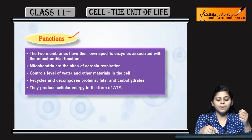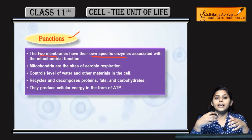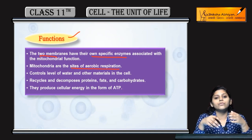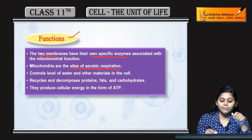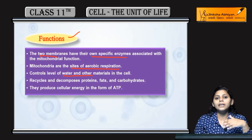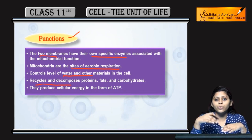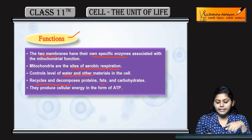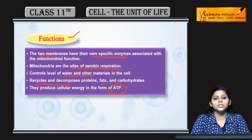Ab function kya hai main mitochondria ka? Do membranes jo hoti hai, they have their own specific enzymes - unke paas apne-apne enzymes hote hai jo specific functions karti hai. It is the site of aerobic respiration - jo bhi aerobic respiration hai woh mitochondria mein hota hai. Control karta hai level of water and other materials in the cell. Recycle and decompose karta hai proteins, carbohydrates ya fats ko. Main important function yeh hai that ATP produce karta hai jo ki cellular energy hai, energy currency of the cell hai - isliye isse powerhouse of the cell bhi bola jata hai.